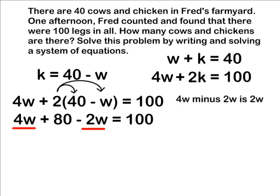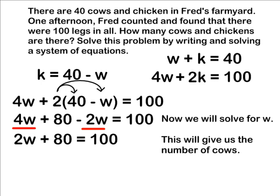Next, we have two w terms, so we can combine those like terms. 4w minus 2w is 2w. So now we have 2w plus 80 equals 100.